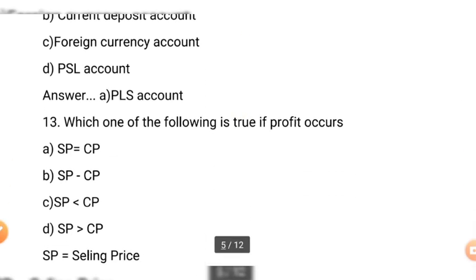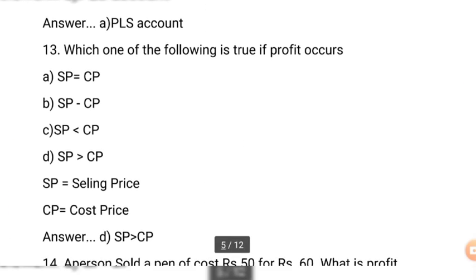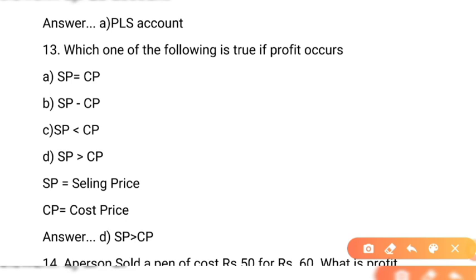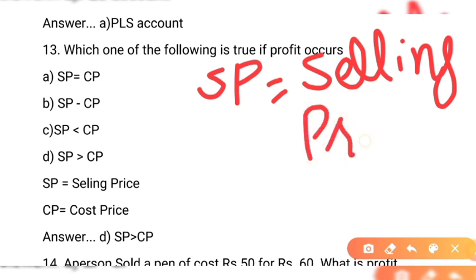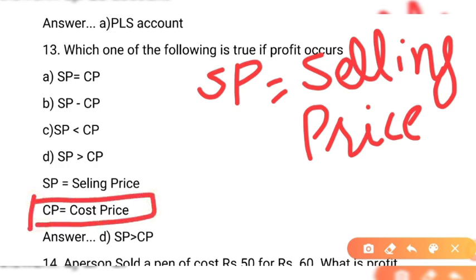Question number 13: which one of the following is true if profit occurs? Yaani agar profit ho jaye to uske liye kaunsa option correct hai? SP kya hai — SP selling price hai, S for selling aur P for price. Aur CP kya hai — CP cost price hai.